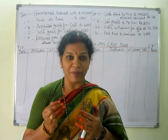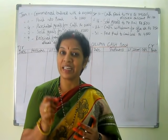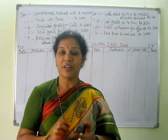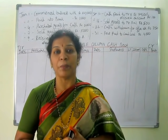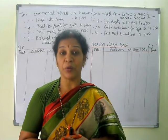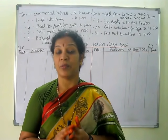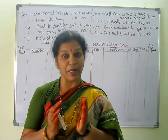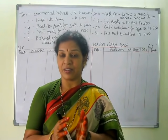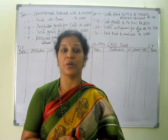Whenever we find discount transactions and bank transactions along with cash, then we need to prepare a triple column cash book. You have to identify which transactions have bank transactions, identify those transactions and proceed.